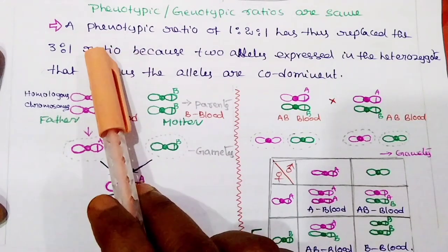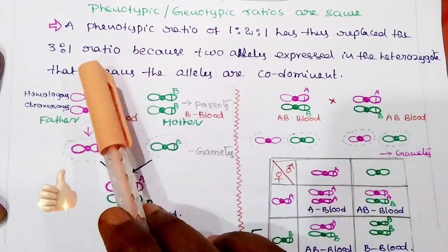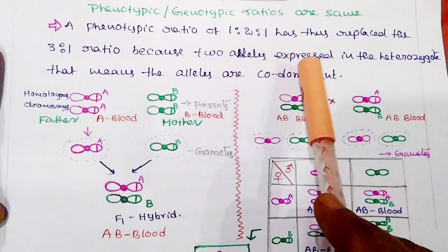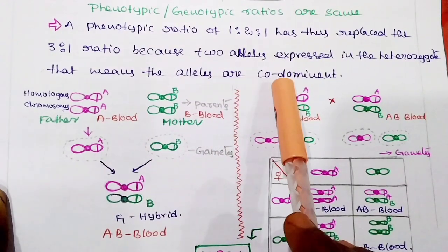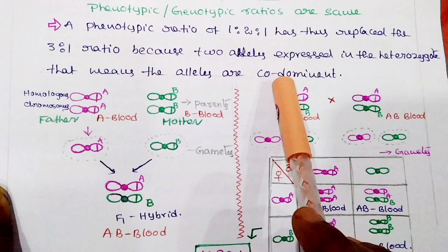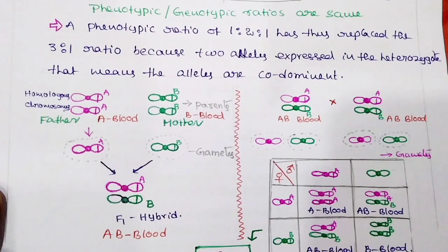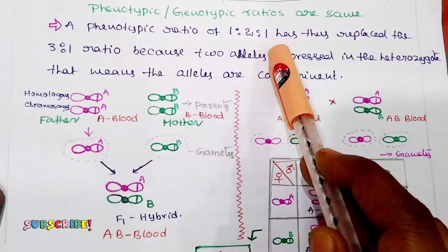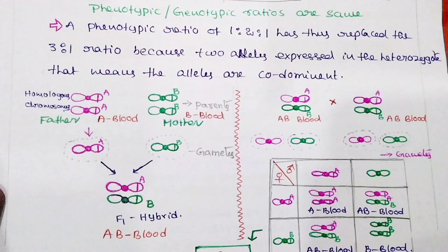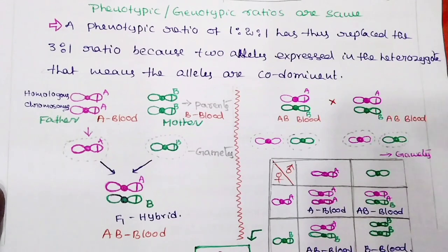So a phenotypic ratio of 1:2:1 has replaced the 3:1 ratio, because two alleles are expressed in the heterozygote — meaning the alleles are codominant. According to Mendel, the monohybrid F2 phenotypic ratio is 3:1, but here it is replaced by 1:2:1, because both alleles are codominant and are expressed jointly in the F1 hybrid when in heterozygous condition.